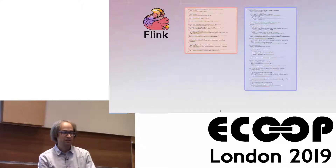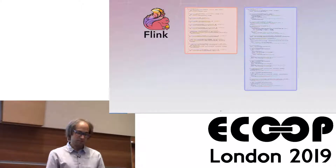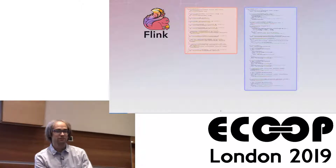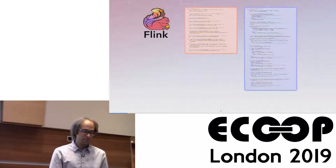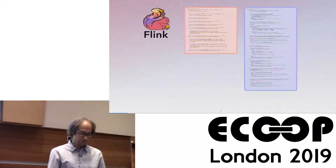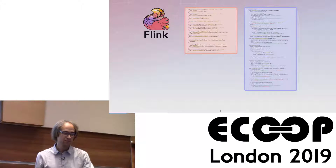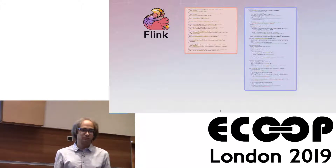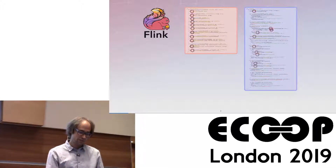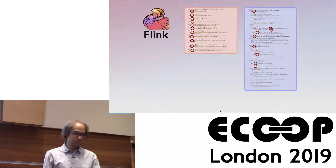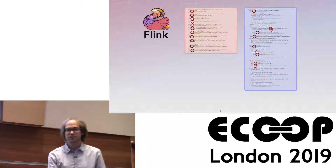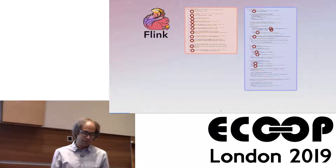Let's look at how state-of-the-art real-world distributed systems are developed today. Here is an example — actual code taken from the Apache Flink stream processing system. We have two components, a red component and a blue component, that may run on different hosts. These components are part of Flink's task scheduling and task deployment logic. Those two components are actors communicating by exchanging messages, and I've marked all the places where messages are sent from one component to the other. Just from looking at the code it's not really clear where these messages are handled, or if they are handled at all.